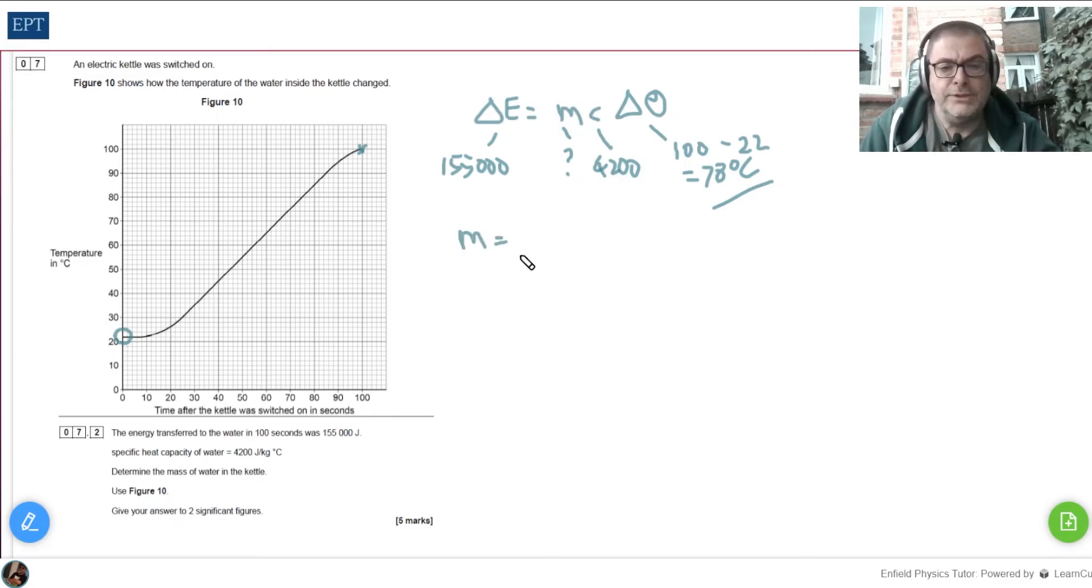The next job then is to rearrange this equation, ΔE = mcΔθ, so that we end up with m equals. If you look, this C is multiplying on the right hand side, so we do the opposite, we divide everything by C. Therefore we get ΔE over C equals mcΔθ over C, and of course those two C's cancel out. Leaving us now with Δθ on this side, and we divide everything by Δθ, then we'll have m on its own. So divide by Δθ now, so ΔE over C, in brackets, all divided by Δθ equals m.